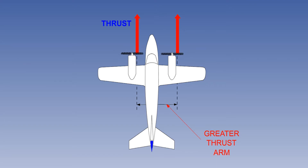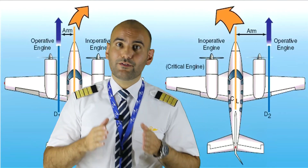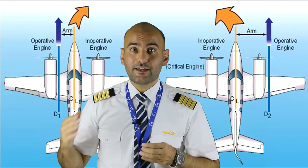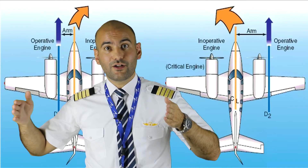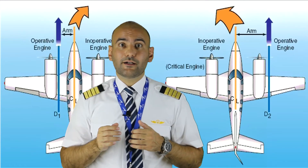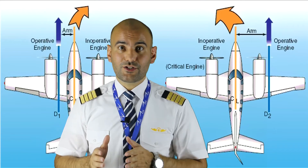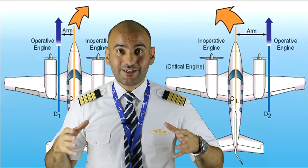This means the right-hand thrust has a greater arm and generates a greater moment. So the failure of the left-hand engine will result in a larger yaw effect via the operating right-hand engine, which has larger moments, rather than vice versa. It is termed the critical engine since the operating right-hand engine produces a stronger yaw moment.